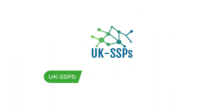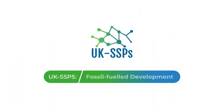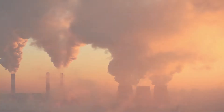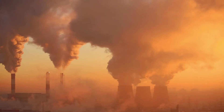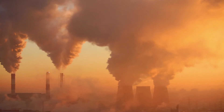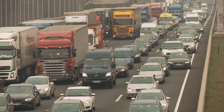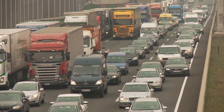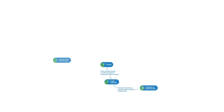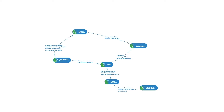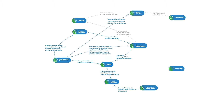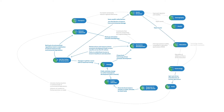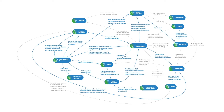UK SSP5, the fossil fuel development scenario, shows the UK transitioning to a highly individualistic society where the majority become wealthier through the exploitation of natural resources combined with high economic growth. It represents a technologically advanced world with a strong economy that is heavily dependent on fossil fuels, but with a high capacity to adapt to the impacts of climate change.